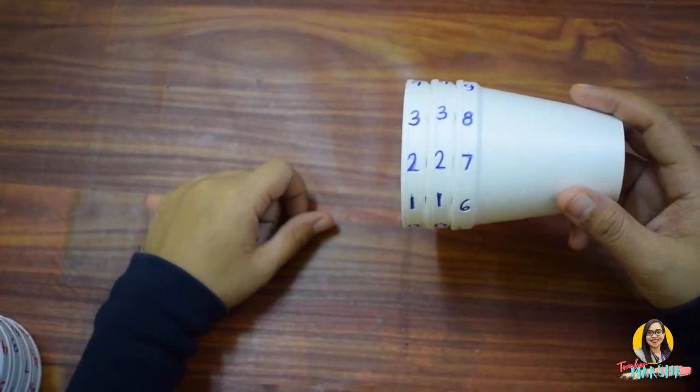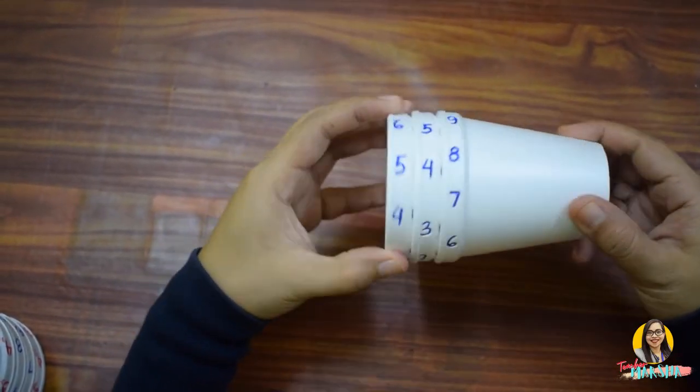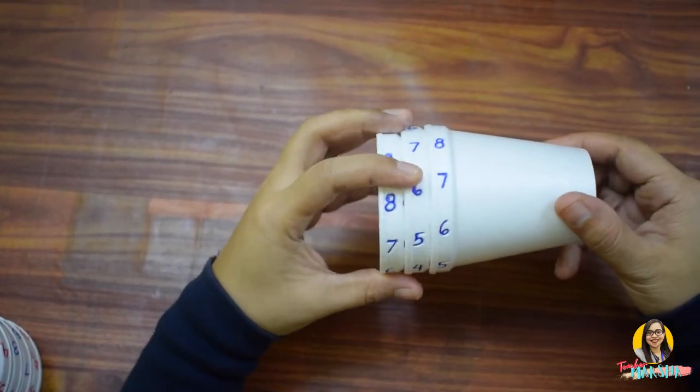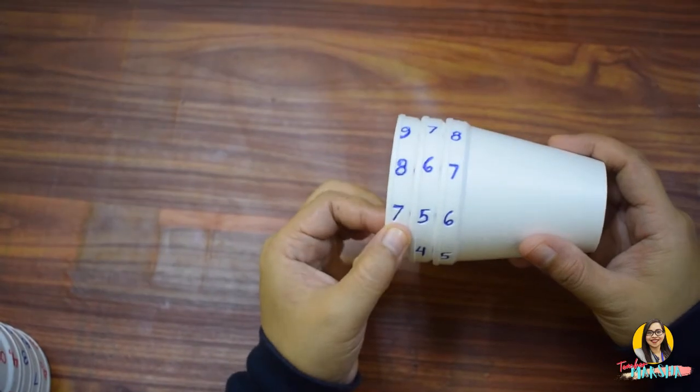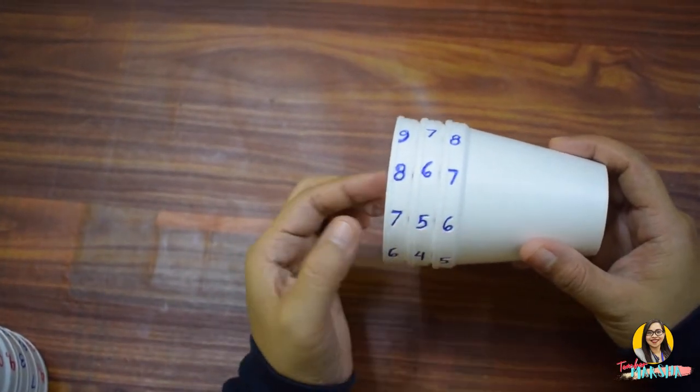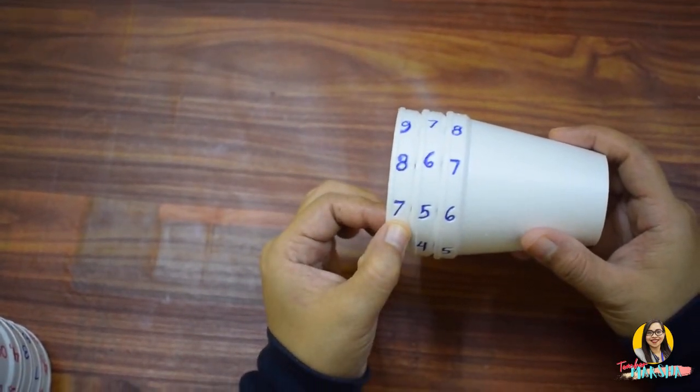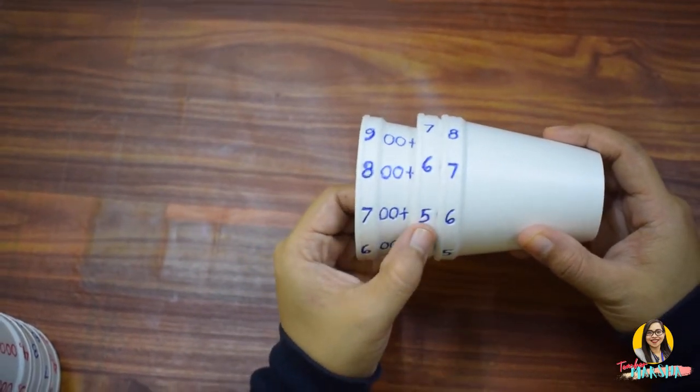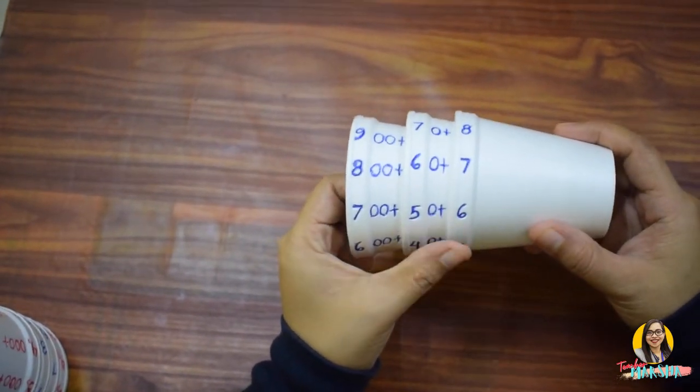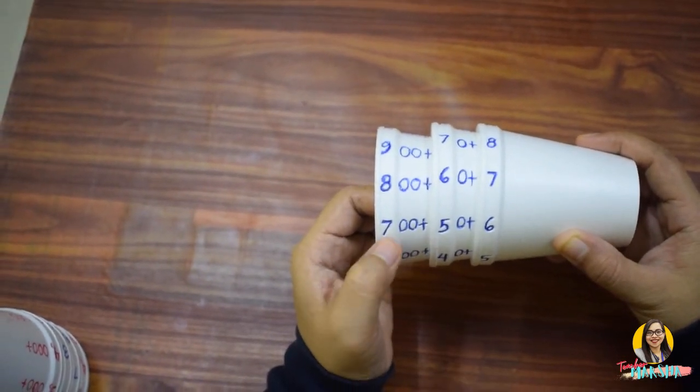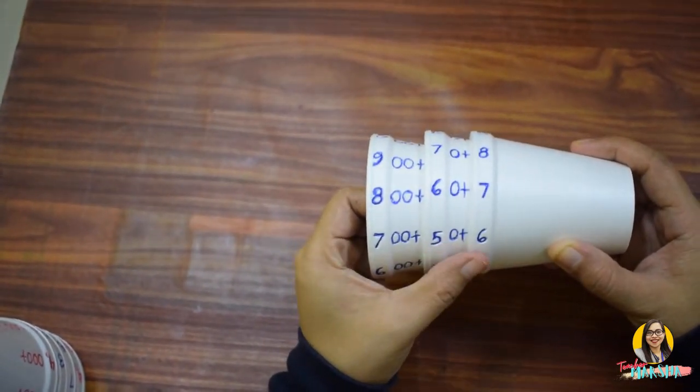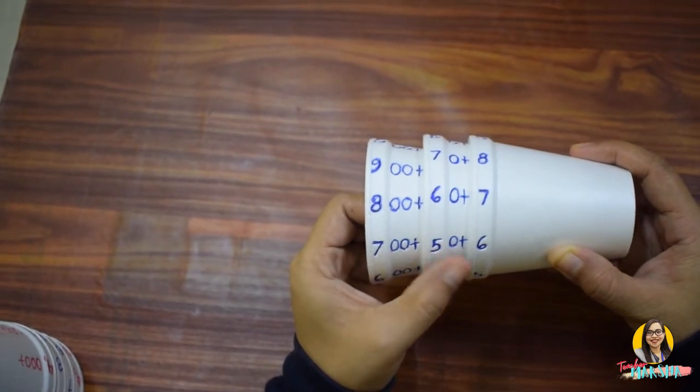Let's have another example. Let's select three numbers. So, we have 7, 5, and 6. The value of 7 in this number is 700. The value of 5 is 50 while the value of 6 is 6. So, let's add them together. 700 plus 50 plus 6 is 756.